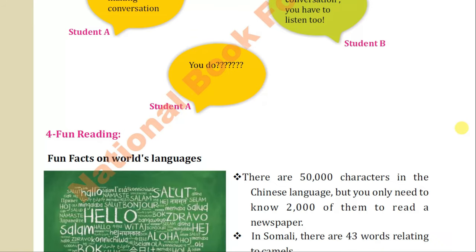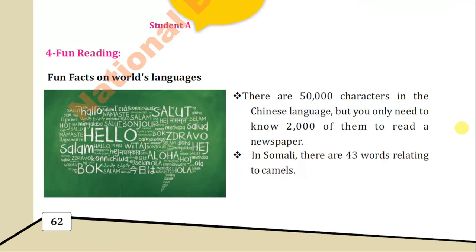We also have fun facts on world languages. There are about 50,000 characters in the Chinese language — there are no alphabets like in Urdu or English, but characters, 50,000 of them. However, you only need to know 2,000 of them to read a newspaper. The other fun fact is about Somali, a language spoken in Somalia — there are 43 words relating to camel. So these are the fun facts given at the end of the unit. With this we come to the end of the unit, and after that we will start grammar, inshallah.